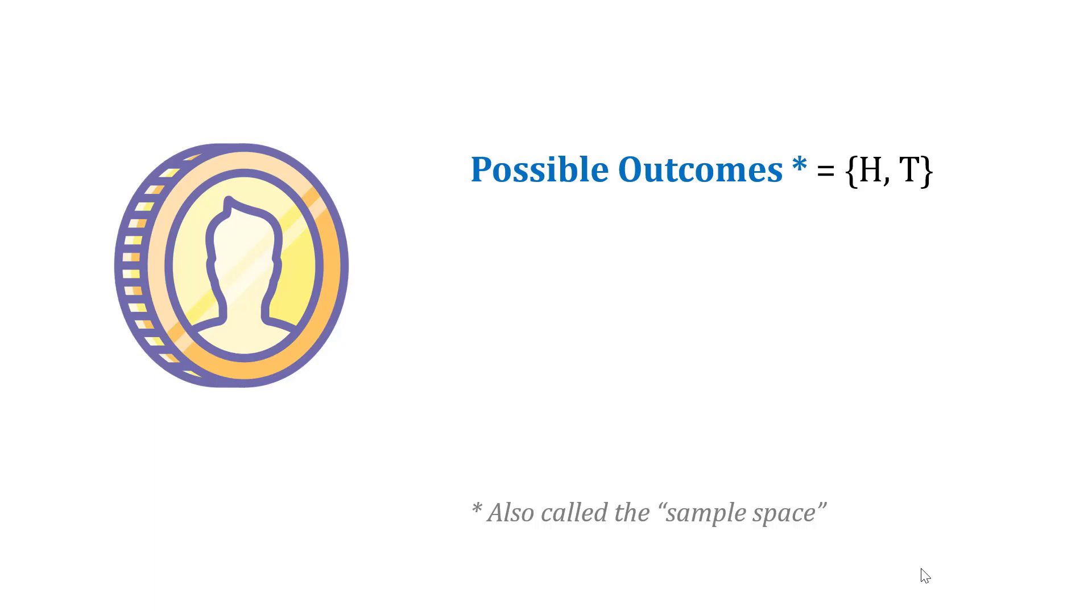Now let's look at flipping a coin again. The possible outcomes, which we also call the sample space, could be heads or tails. We just use H or T here. The probability of getting heads is 1/2, or 0.5 or 50%. And it's the same for tails, assuming we have a fair coin.